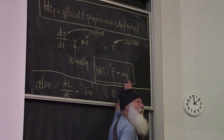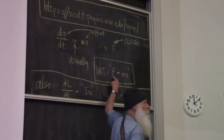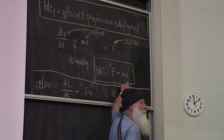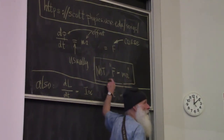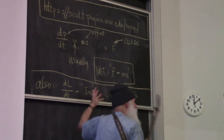When you say F equals MA, the cause is not the acceleration — the cause is the force. So you should put the force on the right of the equal sign and the acceleration on the left.